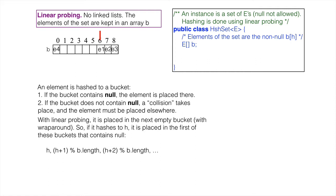In summary, if an element hashes to bucket H, the element is placed in the first of the following buckets that contains null: bucket H, bucket H+1 mod B.length, bucket H+2 mod B.length, and so on.